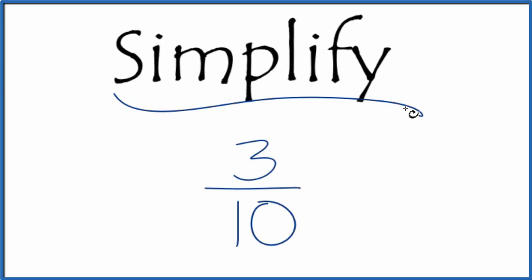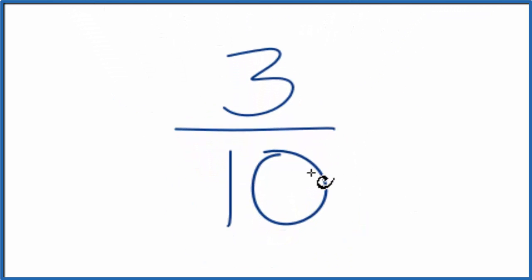In this video we're going to simplify or reduce the fraction 3 tenths. So what we're trying to do is to get the fraction 3 over 10 in its lowest form. It'll still have the same value as 3 over 10, it'll just be in a reduced form.